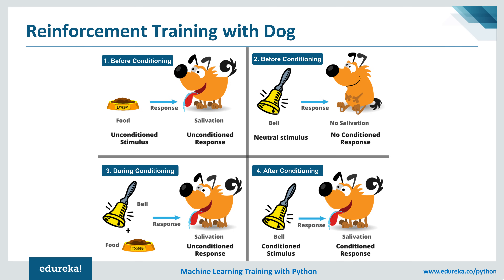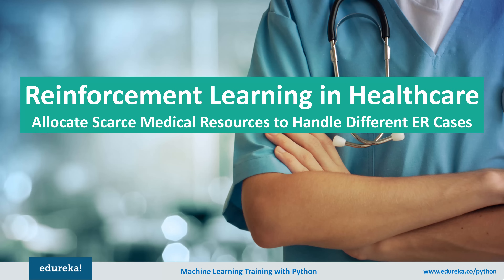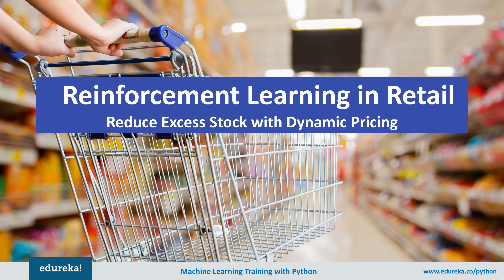Let's see how reinforcement learning is applied in banking, healthcare, and retail. In the banking sector, reinforcement learning is used to create a next-best-offer model for a call center by building a predictive model that learns over time as users accept or reject offers made by the sales staff. In the healthcare sector, it is used to allocate scarce medical resources for different types of ER cases by building a Markov decision process that learns treatment strategies for each type of ER case. In the retail sector, it can be used to reduce excess stock with dynamic pricing by building a dynamic pricing model that adjusts prices based on customer responses to offers.